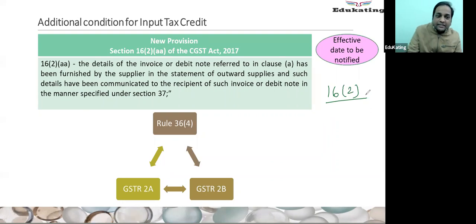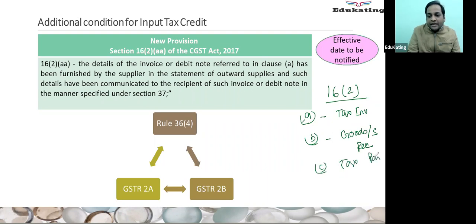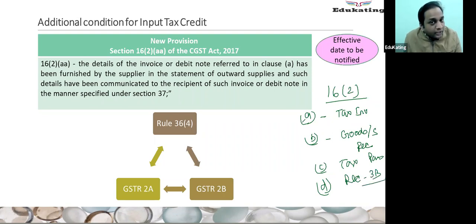The first condition — Clause A: you should have the tax invoice. Clause B: goods or services have been received. Clause C: tax has been paid by the supplier. And Clause D: the recipient has filed GSTR 3B. These are the four conditions.